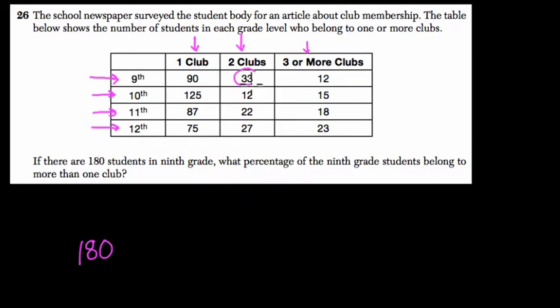So I noticed that there's 33 students in two clubs, and there's 12 students in three or more. Together, 33 plus 12 is 45. So there are 45 students who are in more than one club, for sure.